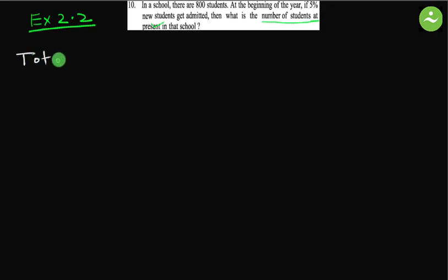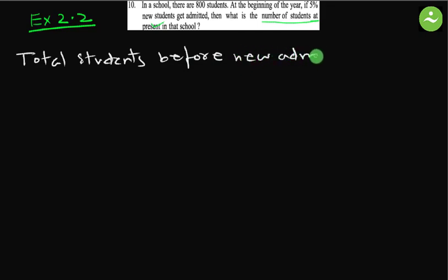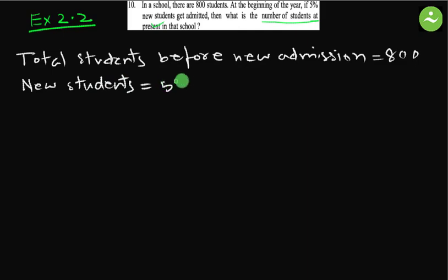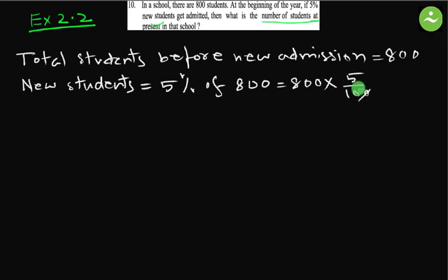Total students before new admission: 800. Number of new students equals five percent of total students, that is five percent of 800. We know 800 multiplied by five divided by 100. Simplify — double zero and double zero cancel — five into eight equals 40. So new students is 40.